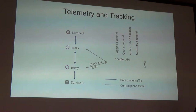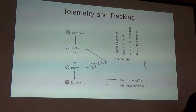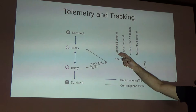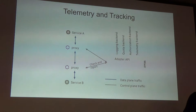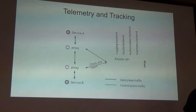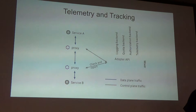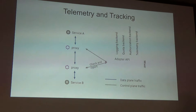For telemetry and policy checking, all proxies send their data to a service called Mixer. Mixer allows integration with other adapters that can include logging backends, quota backends, authorization backends, and telemetry backends. There are integrations with Prometheus, Elasticsearch for logging, or private services like Stackdriver or CloudWatch. You can integrate Mixer with them to send logs, quota authorizations, and telemetry. We use this in VAMP by checking Prometheus and Elasticsearch. You can also write your own adapters — we are looking into out-of-process adapter development.